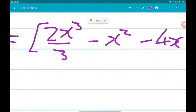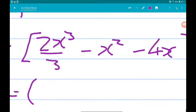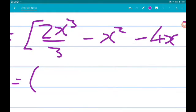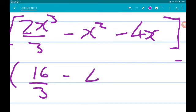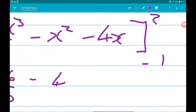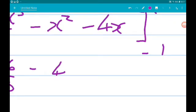Okay. So, we are going to get 2 cubed is 8, 2 times 8 is 16. So, we get 16 thirds minus 2 squared, 4 minus 4 times 2, so 8.